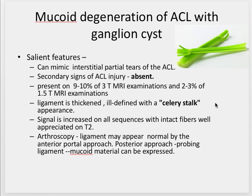The main feature here is the thickened ligament giving a celery stalk appearance, which is slightly defined in between, and the signal is increased on all sequences. We should be able to appreciate the intact fibers on the T2-weighted image, which rules out an acute or chronic tear of the anterior cruciate ligament.